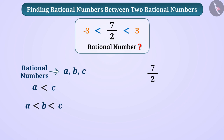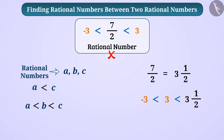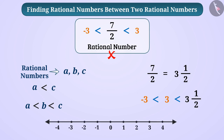Here, 7 by 2 is equal to 3 and 1 by 2, which is a larger number than both minus 3 and 3, so we cannot call it a rational number between minus 3 and 3. By comparing the values of numbers you can find out if a number falls in between the given numbers. This comparison can also be done on the number line. Let us now learn some interesting methods of finding rational numbers between two rational numbers.